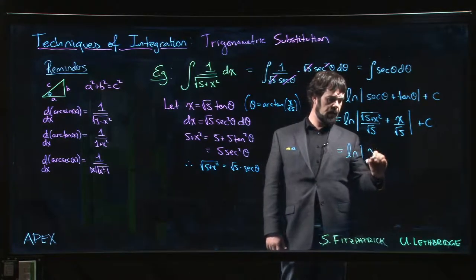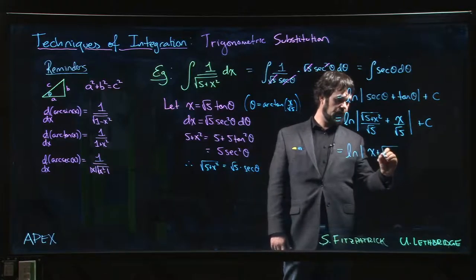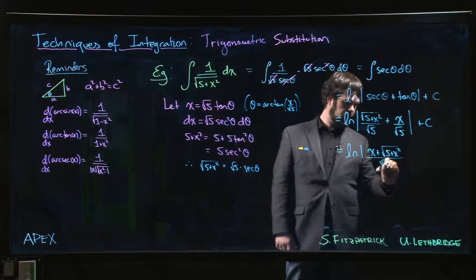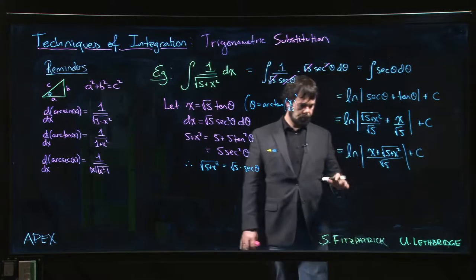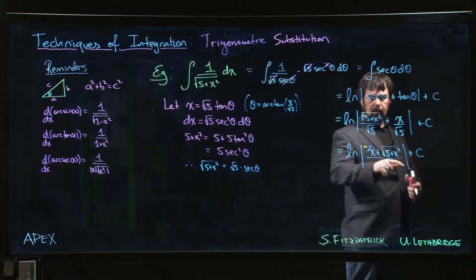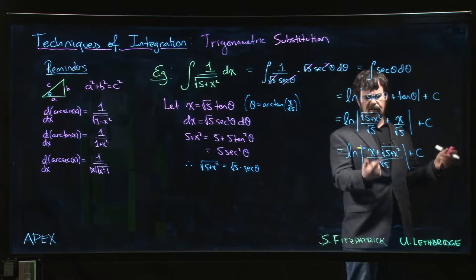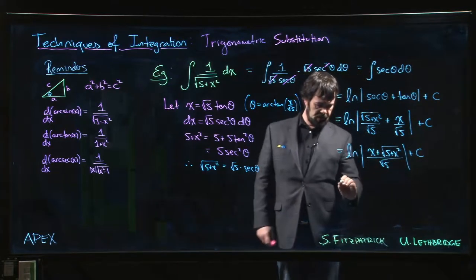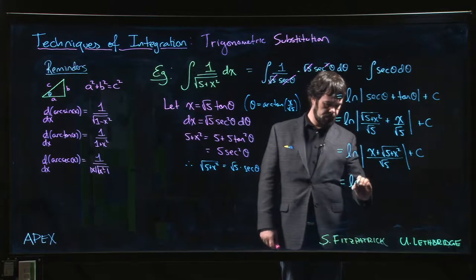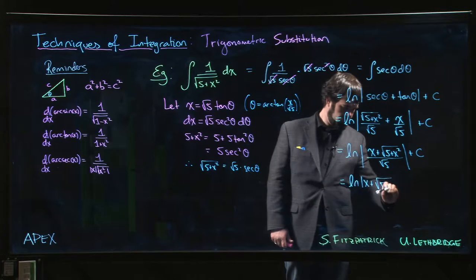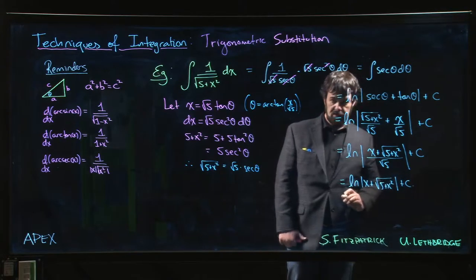We could notice that we have, I like having that x in front. Root 5 plus x squared plus x, the whole thing is over that root 5. Now remember your log properties. We can write this as log of the top minus log of the bottom. The log of the bottom is a constant, right? It's root 5. Log of root 5. We can absorb that into the plus c, right? So maybe it's a different constant than it was before, but it would be perfectly fine to give your answer like that.